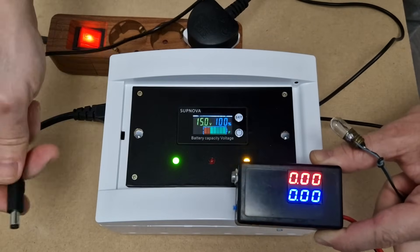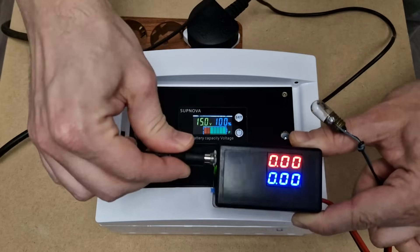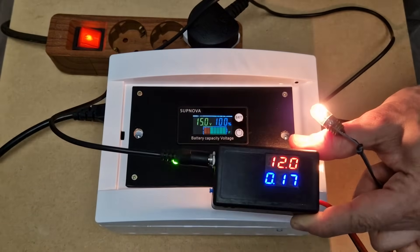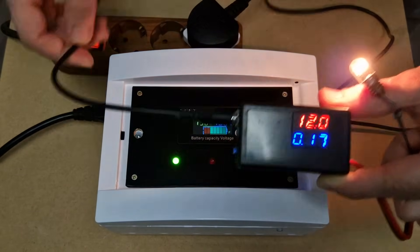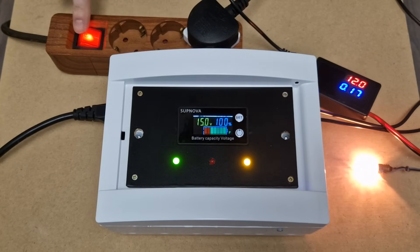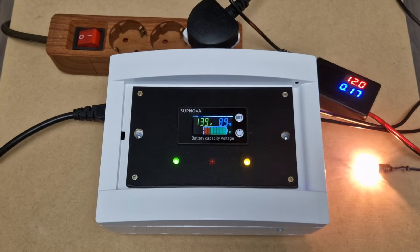Let's check the UPS outputs using a simple light bulb. At the moment, the UPS is running on mains power. This is the 12 volts output. The bulb is fully lit. Let's simulate a power outage. There is no flicker on the light bulb because there is no switching time. All LEDs go out, only the battery indicator remains on. The UPS is running on battery backup.